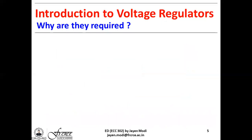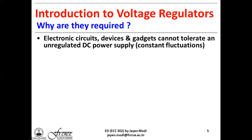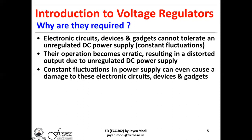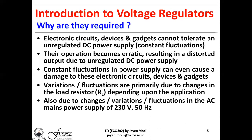Since we are already getting a filtered output DC voltage, why do we still need voltage regulators? Electronic circuits, devices, and gadgets cannot tolerate an unregulated DC power supply with constant fluctuations — their operation becomes highly erratic, resulting in distorted output, and constant fluctuations can even cause damage. There are also variations due to changes in the load, since some loads may be very heavy while others are light, and fluctuations due to changes in the 230 volts 50 Hz AC mains supply.